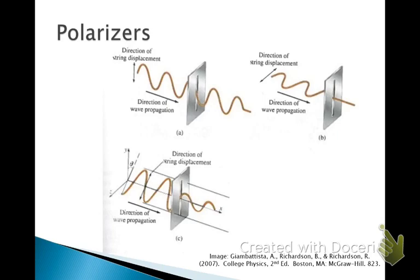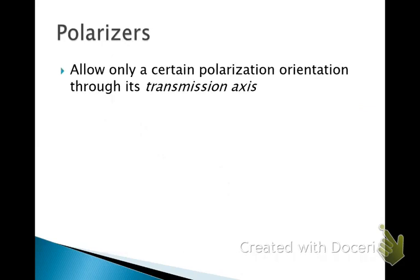And if I'm at some kind of tilted angle, sort of diagonally oscillating it, then when it hits the slit, it'll dampen some of that motion and allow through only the component of the wave that's moving up and down. And that's the purpose of polarizers.